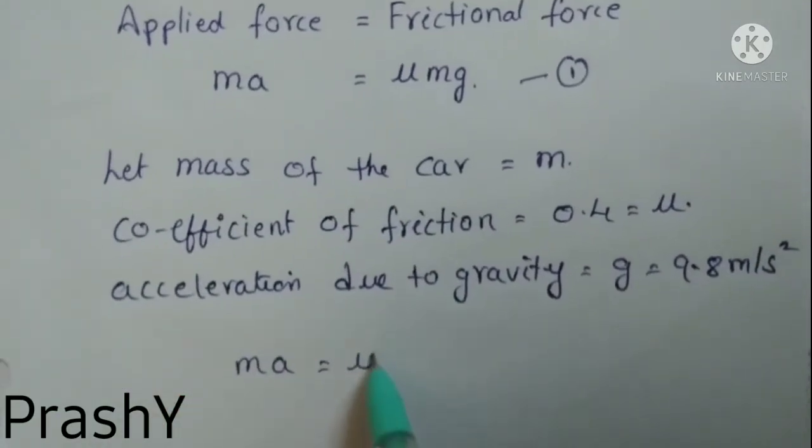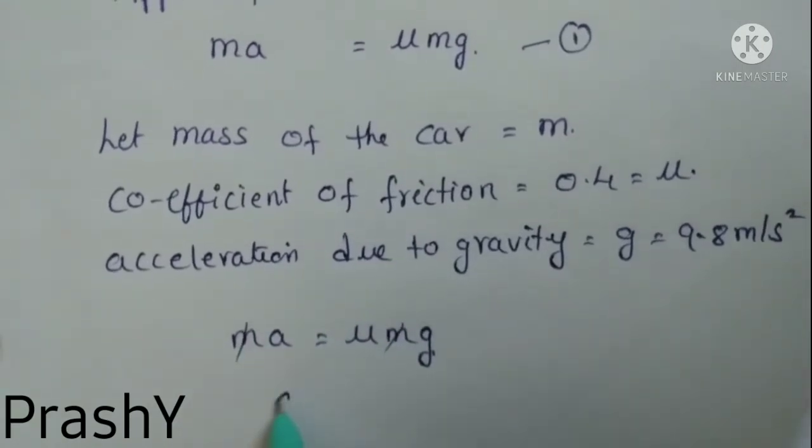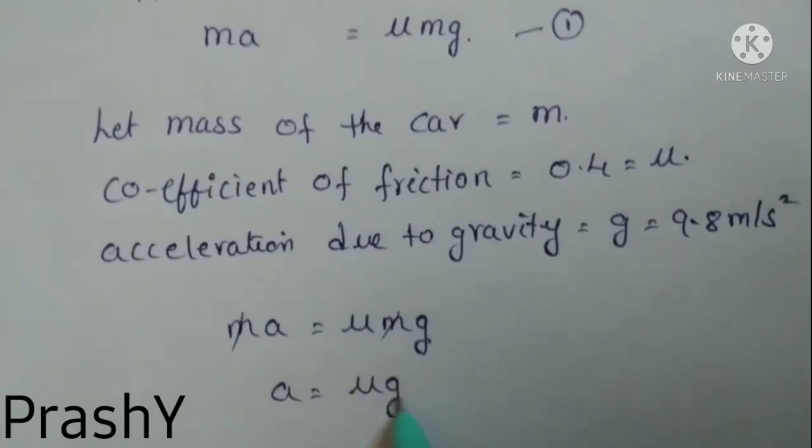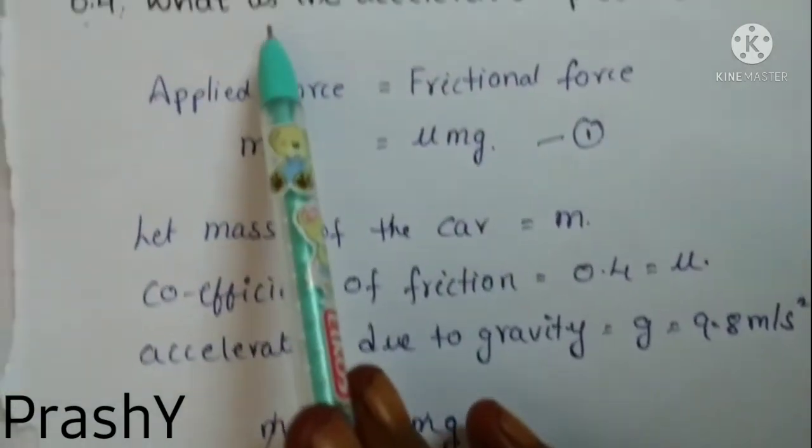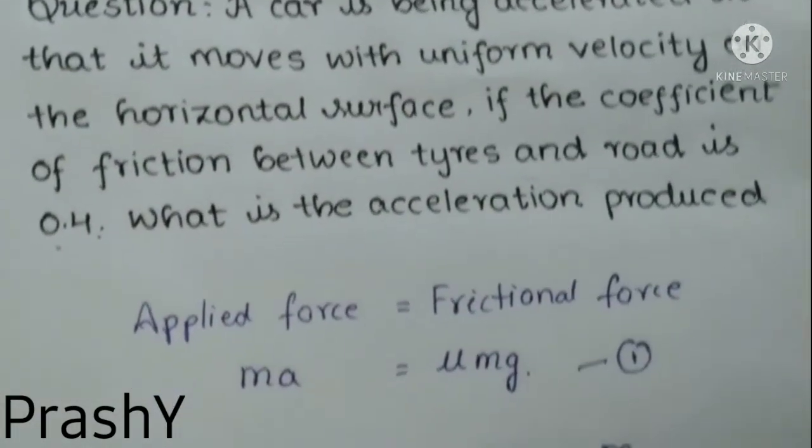In this question we have to find the acceleration produced. We have the formula for acceleration: a equals μ times g.